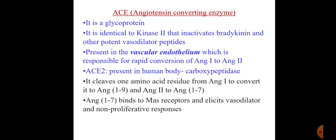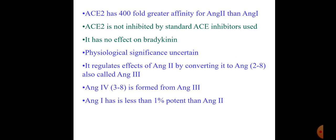ACE2 is also present in the human body — it is a carboxypeptidase that clips one amino acid residue from angiotensin 1 to convert it to Ang 1-9, or converts angiotensin 2 to Ang 1-7. When the major pathway is blocked, these additional metabolites are produced. Ang 1-7 binds to the MAS receptor and elicits a vasodilatory and non-proliferative response, whereas angiotensin 2 is a vasoconstrictor. ACE2 is not inhibited by standard ACE inhibitors.